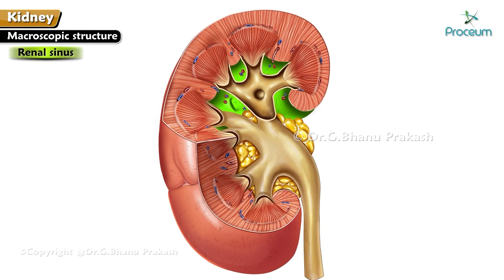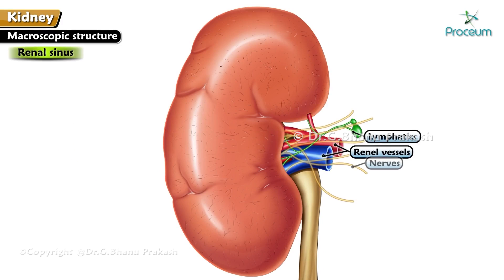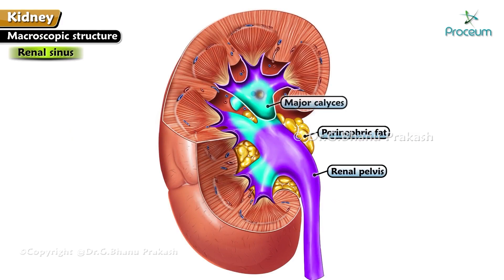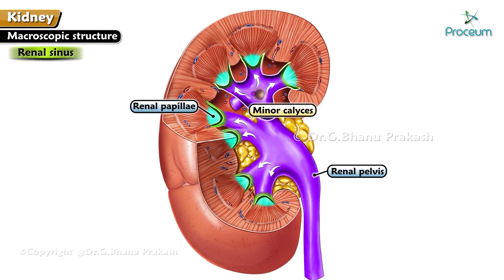The renal sinus is a cavity within the kidney that communicates with the outside through the hilum at the medial border. It contains renal vessels, lymphatics, nerves, perinephric fat, and the renal pelvis. The renal pelvis within the sinus is divided into 2 or 3 large branches known as major calyces, which further divide to form 5 to 11 shorter branches known as minor calyces. Minor calyces have a cup-shaped depression at their outer ends to receive the renal papillae.